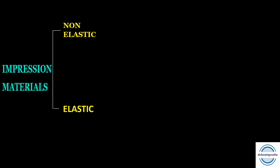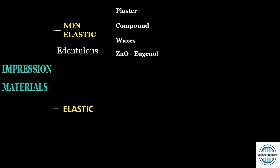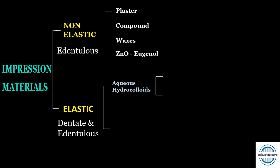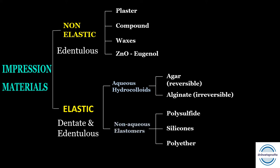The impression materials according to mechanical behavior can be non-elastic and elastic. Non-elastic are the rigid or inelastic impression materials, basically used for edentulous patients with minimal or no undercuts — impression plaster, impression compound, waxes, and zinc oxide eugenol impression paste. Elastic materials are used for edentulous and dentulous patients with undercuts. In this category we have aqueous hydrocolloids — agar (reversible) and alginate (irreversible) — and non-aqueous elastomers: polysulfide, silicones, and polyether. Silicones can be condensation silicone or addition silicone.